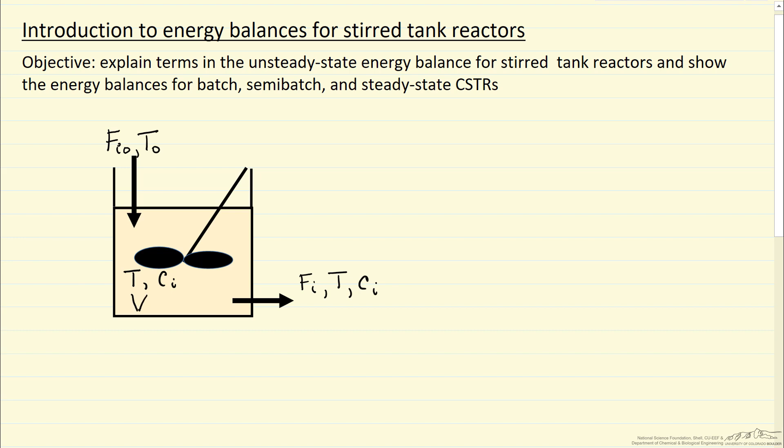V is the volume of the contents of the reactor and n sub i is the number of moles of component i in the reactor. Now to make things simpler and so we can better understand the process, we're assuming constant heat capacity values, heat capacity for each component.